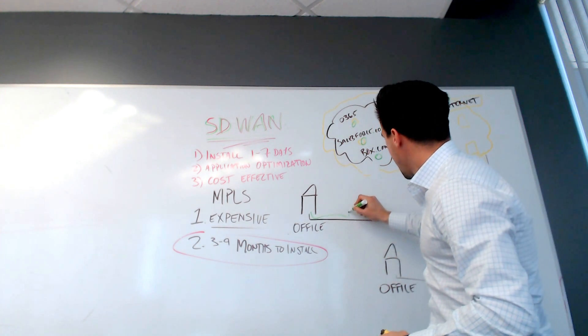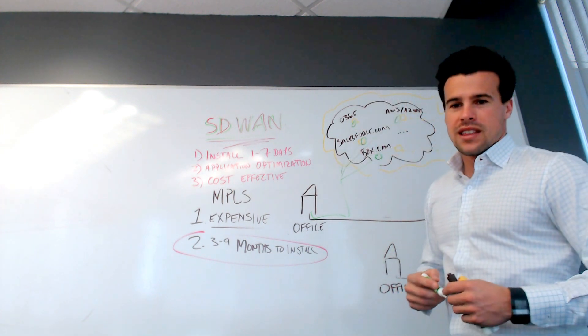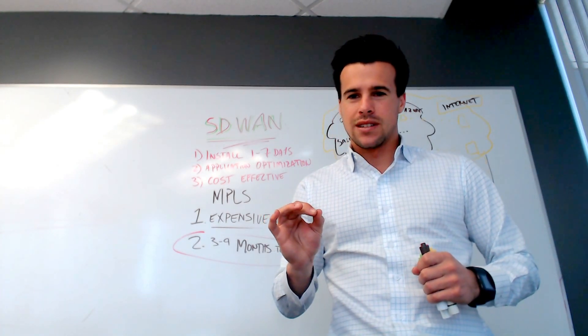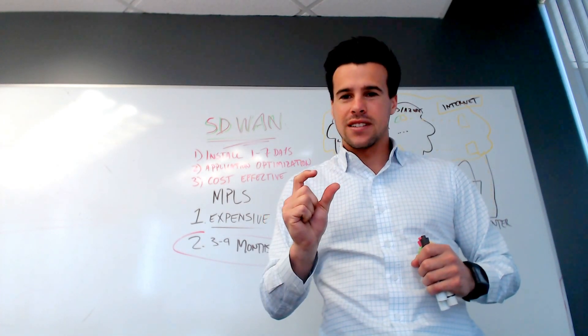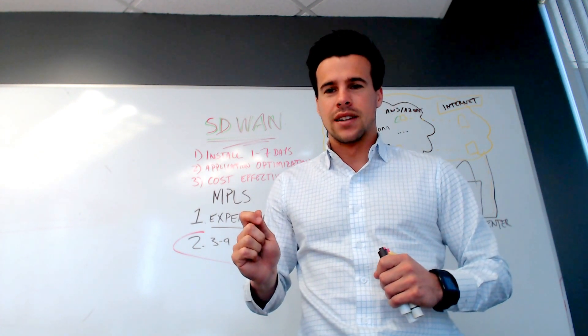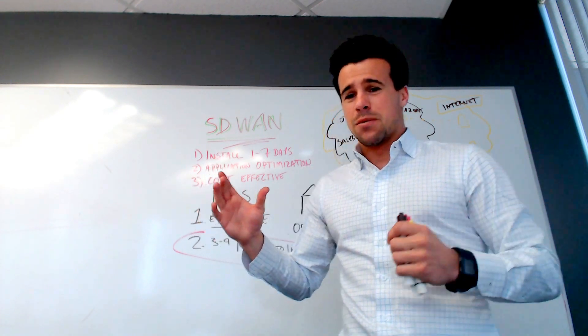so that each office has a direct connection to these applications that they're using. So you get much better application performance at each office using SD-WAN than you would over MPLS. It's a much more intelligent, much better technology. It's much more agile.